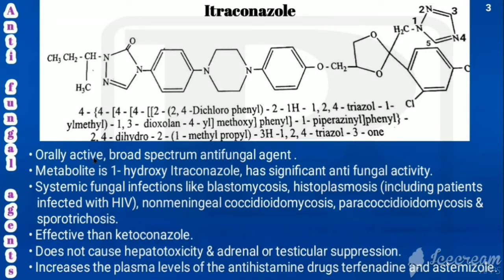Itraconazole is an orally active broad-spectrum antifungal agent. Its main metabolite is 1-hydroxy-itraconazole, which has significant antifungal activity. It is used for systemic fungal infections including blastomycosis, histoplasmosis (including HIV patients), non-meningeal coccidiomycosis, paracoccidiomycosis, and sporotrichosis. It is more effective than ketoconazole and does not cause hepatotoxicity or adrenal/testicular suppression. It increases plasma levels of antihistamines like terfenadine and astemizole.